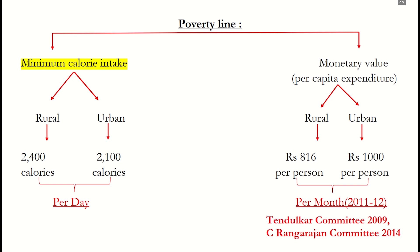Therefore, in 2009 the Tendulkar Committee, and in 2014 the C. Rangarajan Committee, brought a new concept of poverty line based on monetary value. Under this, in rural areas per capita expenditure was decided at Rs. 816 per month, and for urban areas it is Rs. 1000 per month. Since living expenses in rural areas are less compared to urban areas, the monetary value threshold in rural areas is lower.